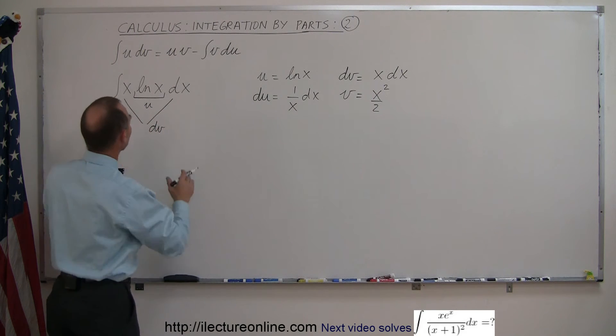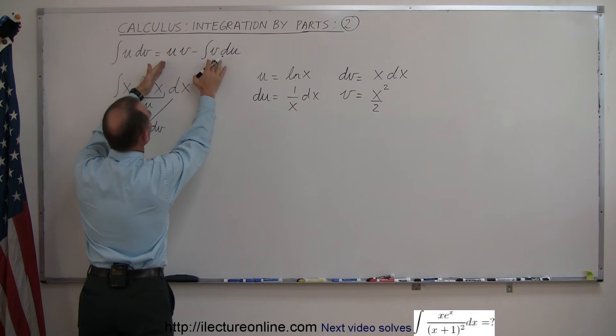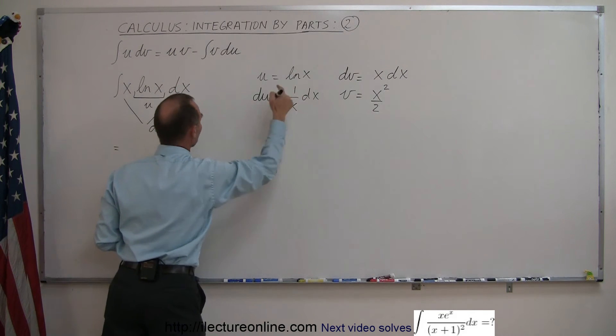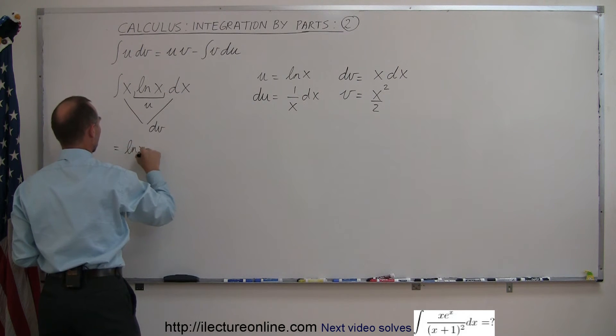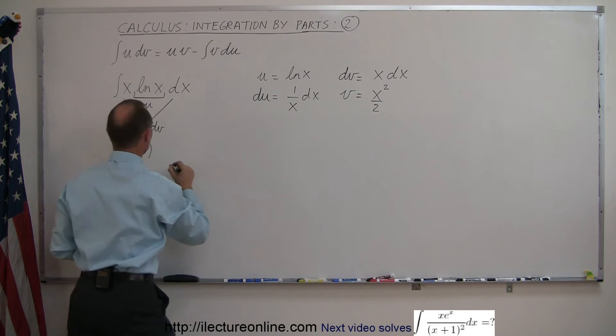So now we can say that this, which is u dv, can be written as u times v minus the integral of v du. So this equals u, which is the natural log of x, times v, which is x squared over 2,